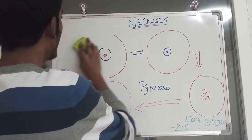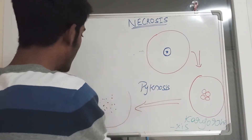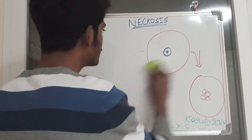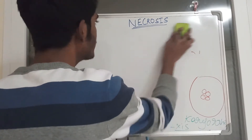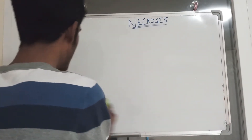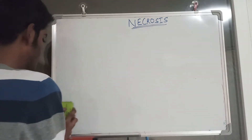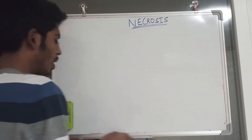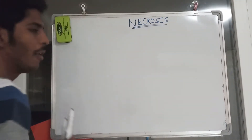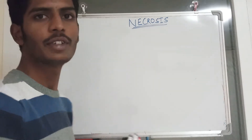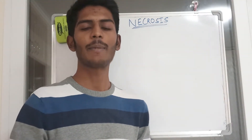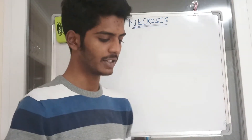Now I would like to discuss the types of necrosis. We have five types: coagulative, liquefactive, fat necrosis, caseous necrosis, and fibrinoid necrosis.